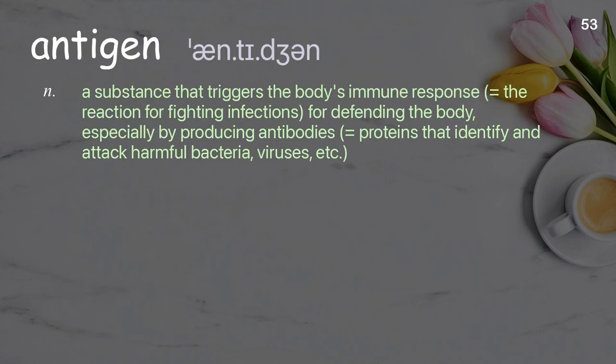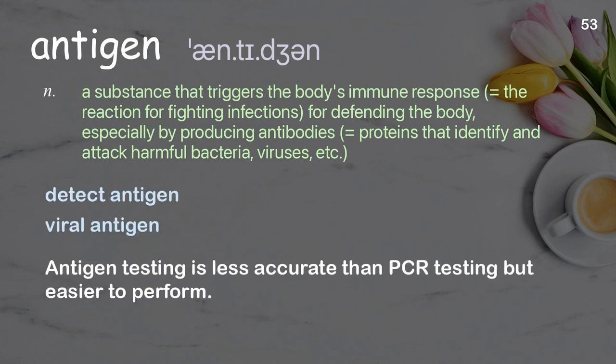Antigen: A substance that triggers the body's immune response — the reaction for fighting infections and defending the body — especially by producing antibodies, proteins that identify and attack harmful bacteria, viruses, etc. Examples: Detect antigen. Viral antigen. Antigen testing is less accurate than PCR testing, but easier to perform.